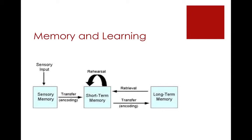Short-term memory is able to hold information for about 25 seconds and can really only hold five to nine items, unless you use rehearsal or other techniques like chunking information. If you rehearse or encode the information successfully, it moves into your long-term memory where it should stay for the rest of your life. Some memories may fade and others can take a while to bring to mind, while others are exceptionally easy to recall.